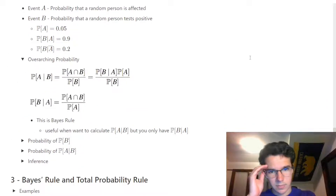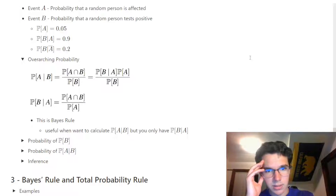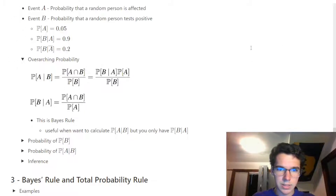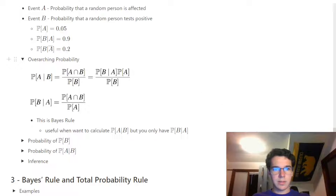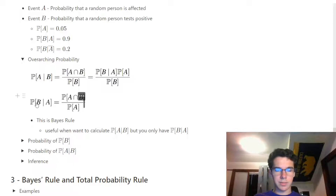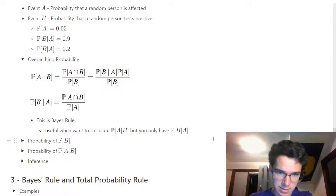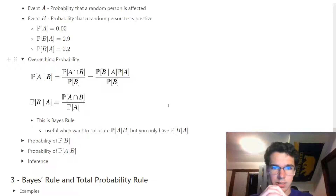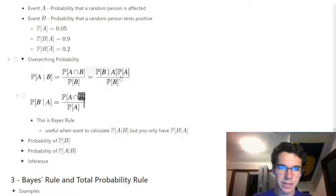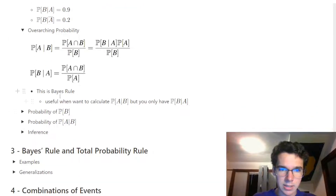P(A|B) equals P(A∩B)/P(B), and we know P(A|B) takes this form. Looking at P(B|A), we can substitute P(A∩B) with P(B|A)·P(A). So P(A|B) = P(B|A)·P(A) / P(B). That's how they're algebraically equivalent. This is called Bayes' rule, specifically the rightmost form. It's useful when we want to calculate P(A|B) but only have P(B|A) — when we have it flipped.